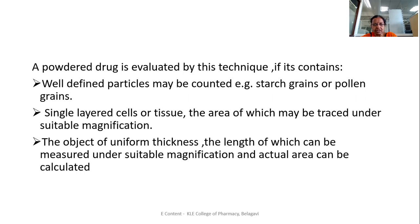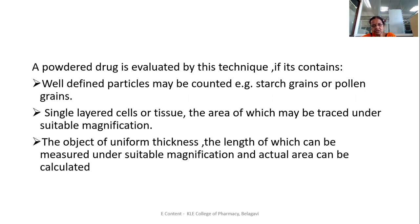A powdered drug is evaluated by this technique if it contains well-defined particles that may be counted, for example starch grains or pollen grains; single-layer cells or tissue whose area may be traced under suitable magnification; or objects of uniform thickness whose length can be measured and actual area calculated. This method is useful only for powdered crude drugs that contain well-defined particles like starch grains or pollen grains.